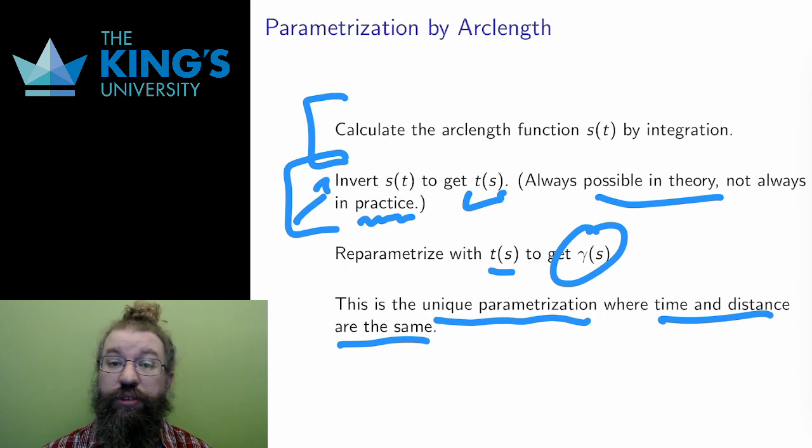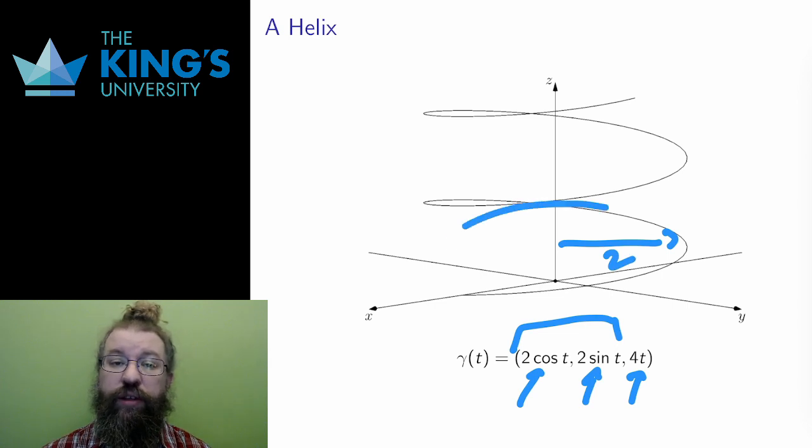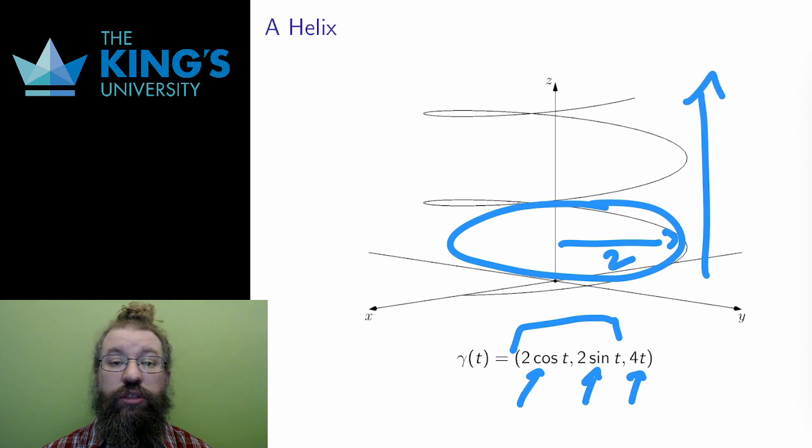Let me do an example. Here is a helix in R3. The curve is 2 cos t, 2 sin t, 4t. Hopefully you can recognize the circle, cos t sin t, with radius 2 in the xy coordinate spots. The growth in the z coordinate gives the helix form as it gains elevation while still spinning around the horizontal circle.